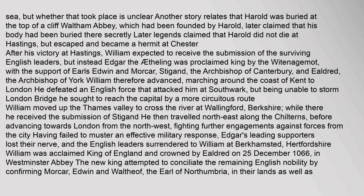After his victory at Hastings, William expected to receive the submission of the surviving English leaders, but instead Edgar the Aetheling was proclaimed king by the Wittenagemot, with the support of Earls Edwin and Morcar, Stigand the Archbishop of Canterbury, and Ildred the Archbishop of York. William therefore advanced, marching around the coast of Kent to London. He defeated an English force that attacked him at Southwark, but being unable to storm London Bridge he sought to reach the capital by a more circuitous route. William moved up the Thames Valley to cross the river at Wallingford, Berkshire, where he received the submission of Stigand. He then travelled northeast along the Chilterns before advancing towards London from the northwest. Having failed to muster an effective military response, Edgar's leading supporters lost their nerve, and the English leaders surrendered to William at Berkhamstead, Hertfordshire. William was acclaimed king of England and crowned by Ildred on 25 December 1066 in Westminster Abbey.